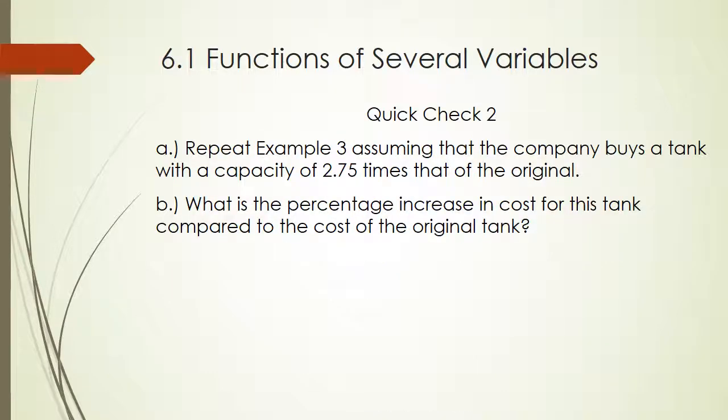Now, if you want to, go back and repeat that example, and assume the company buys a tank with a capacity of 2.75 times that of the original. So you're going to take 10,000 and multiply by 2.75 to find the new capacity. And what is the percentage increase? Pause the recording, give this a try, and resume to check your answer.